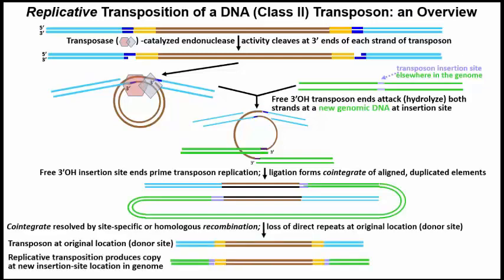As a result of forming this cointegrate, you get an internal chromosome alignment of the two elements, and the DNA can undergo recombination by one of two mechanisms. The result is resolution of the cointegrate and the duplication of short target site DNAs that are the footprints of transposition.